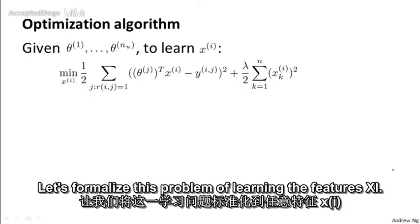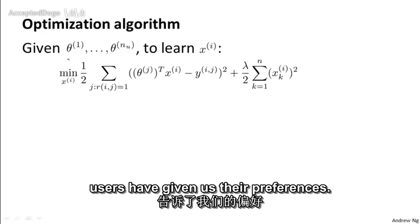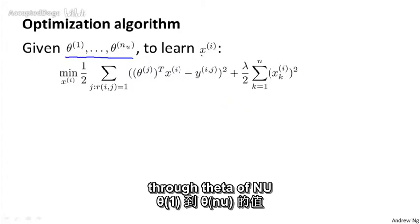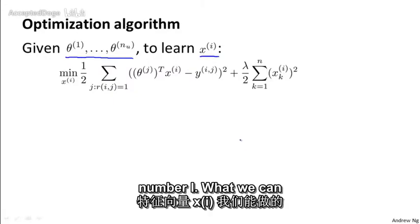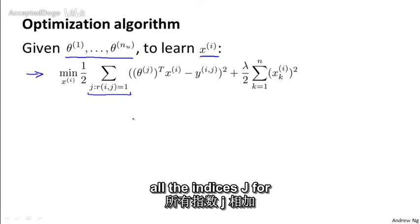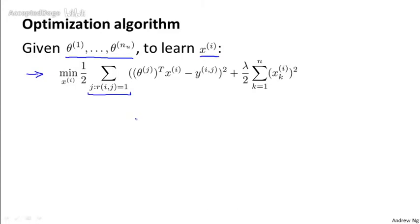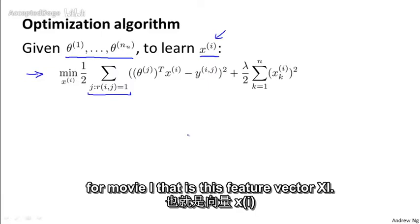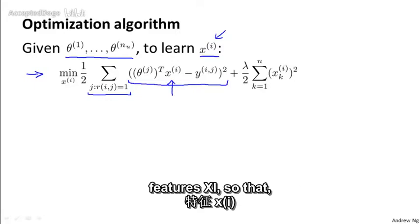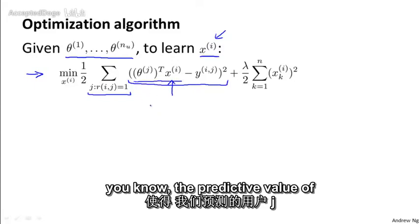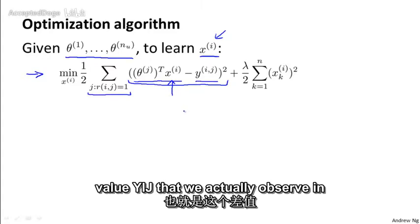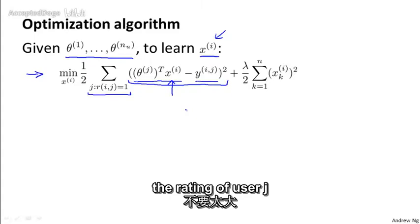Let's formalize this problem of learning the features x i. Let's say that our users have given us their preferences. So let's say that our users have come and told us these values for theta 1 through theta of n u. And we want to learn the feature vector x i for movie number i. What we can do is therefore pose the following optimization problem. So we want to sum over all the indices j for which we have a rating for movie i. Because we're trying to learn the features for movie i. That is this feature vector x i. And then what we want to do is minimize this squared error. So we want to choose features x i so that the predicted value of how user j rates movie i will be similar, will be not too far in the squared error sense of the actual value y i j that we actually observe in the rating of user j on movie i.